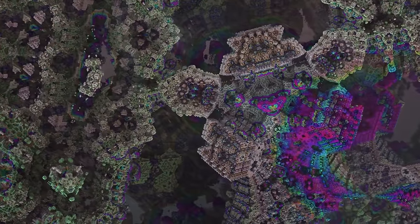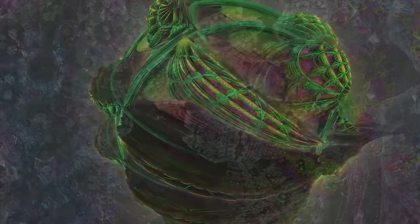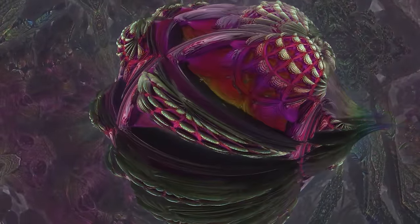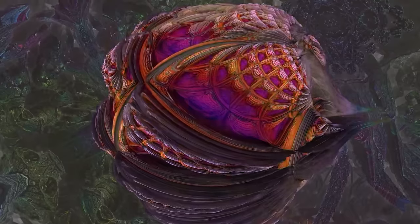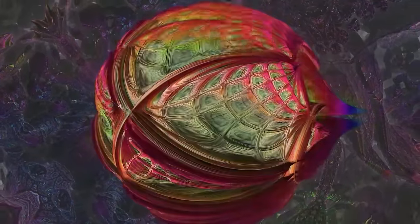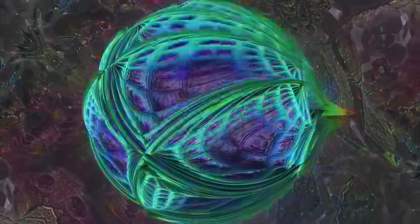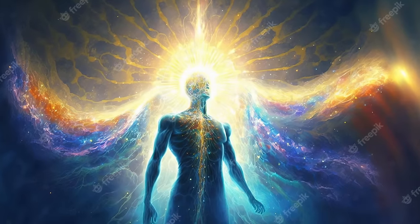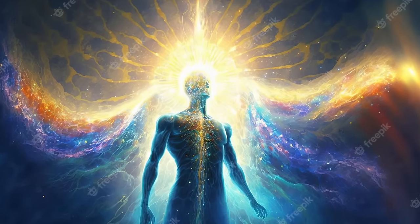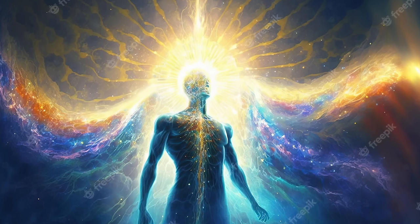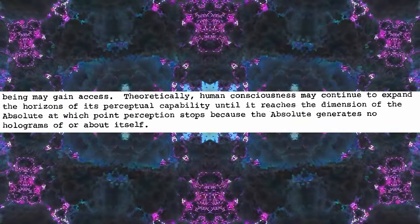This energy in a state of inactive infinity is called energy in its absolute state, or simply the absolute. Apparently, this absolute consciousness can still perceive passively whatever holograms the energy in the universe create. According to Bentov's theory, between the absolute and our material world there are layers we can gain access to in altered states, and we can continue to do so till we eventually reach the top, the absolute. But there, perception would stop because the absolute generates no hologram of or about itself.